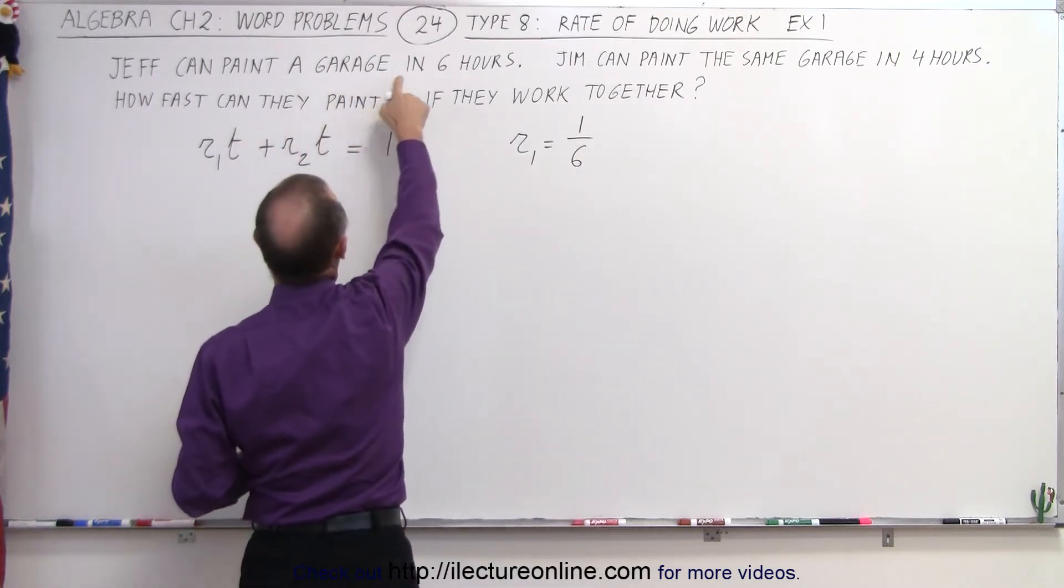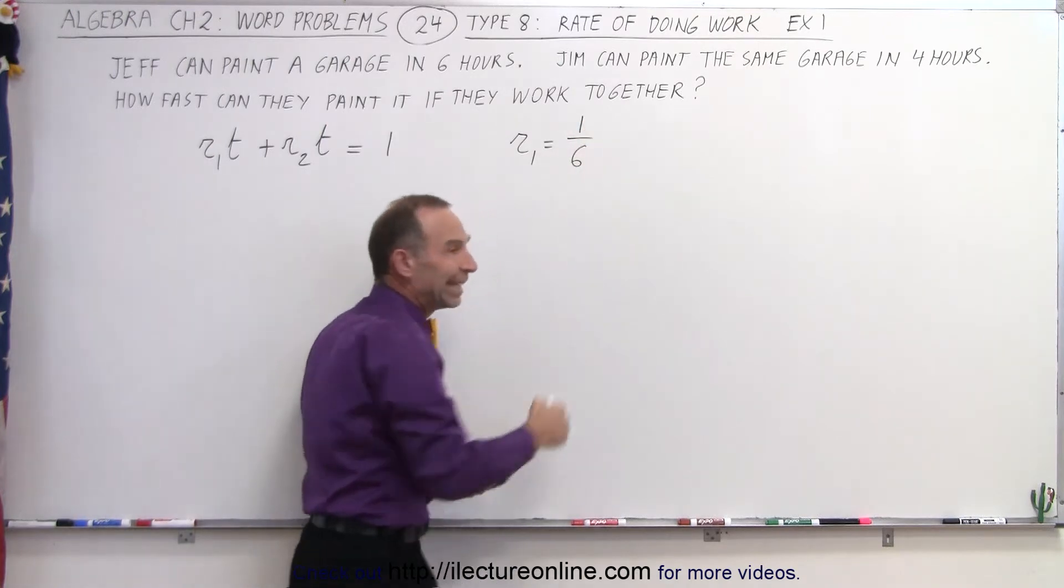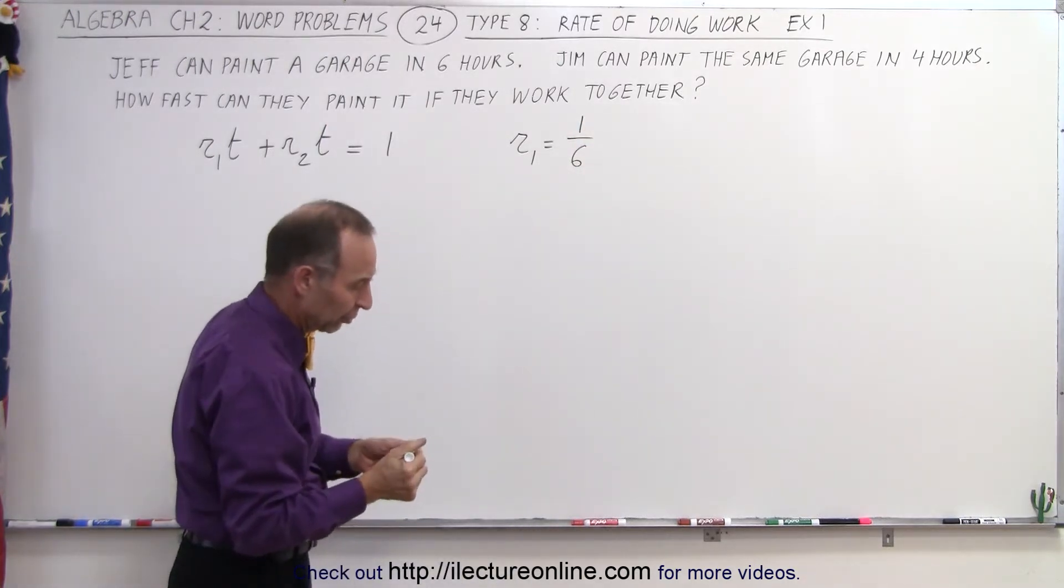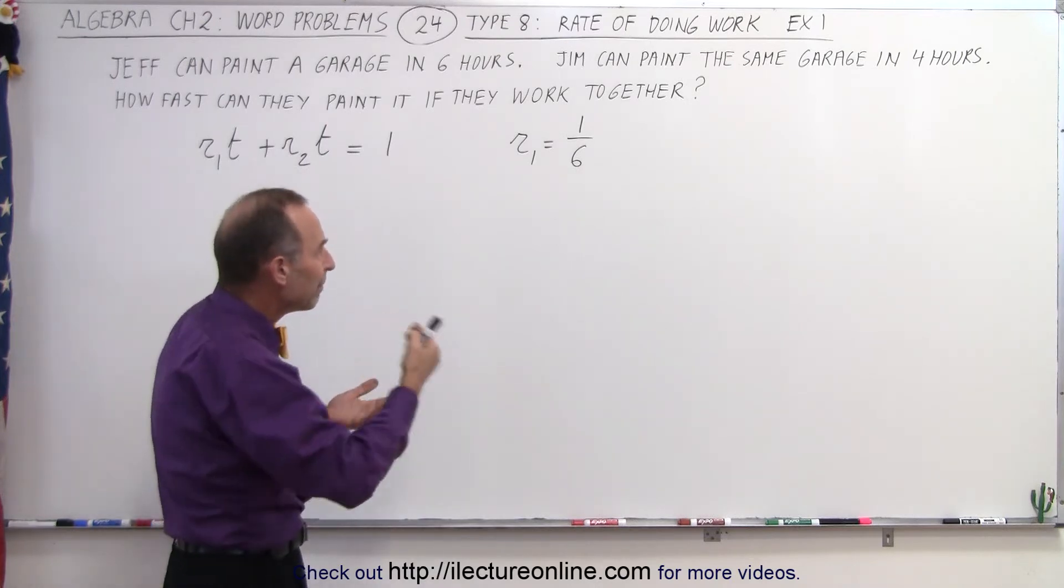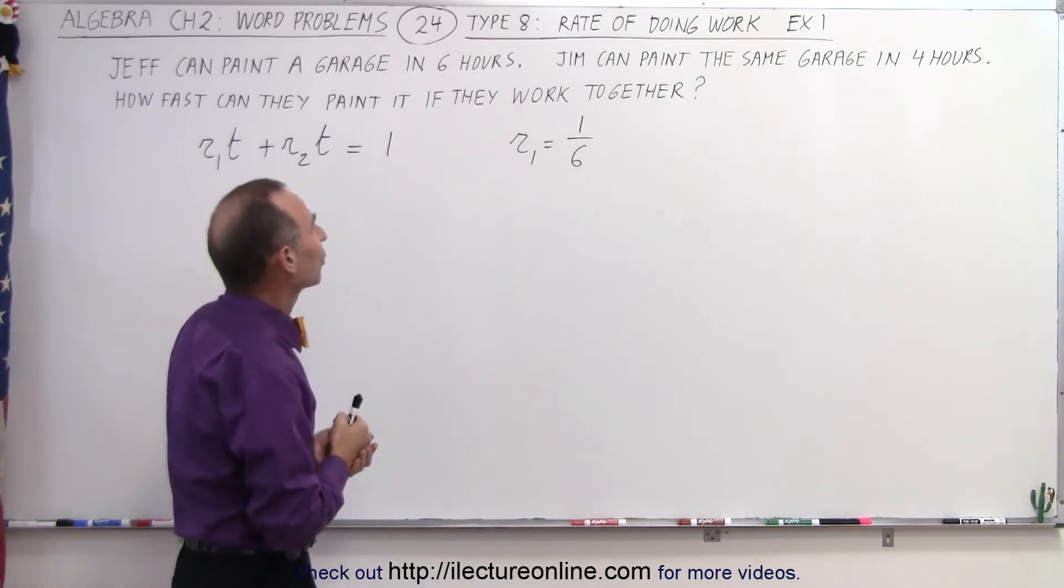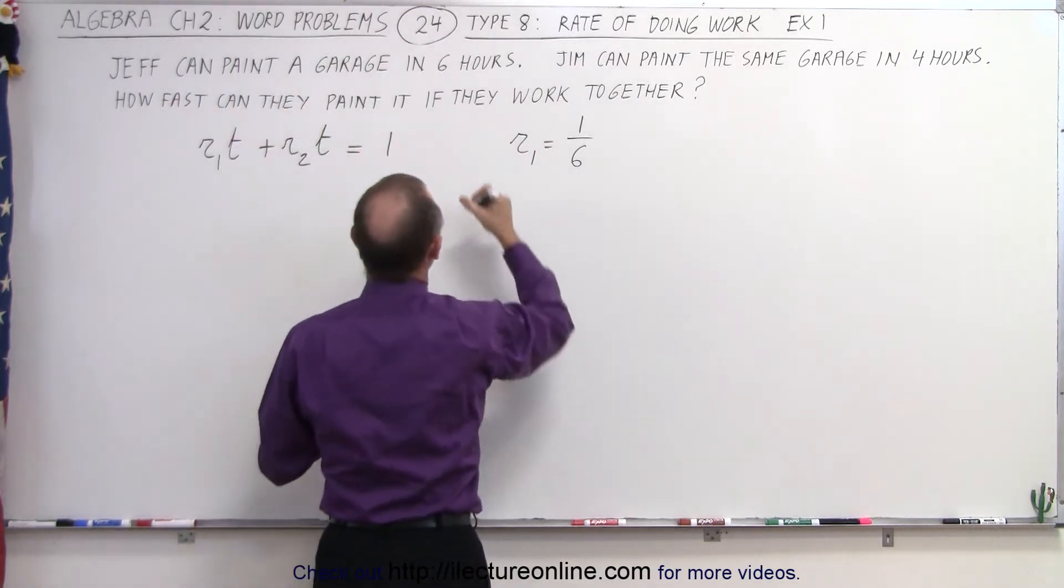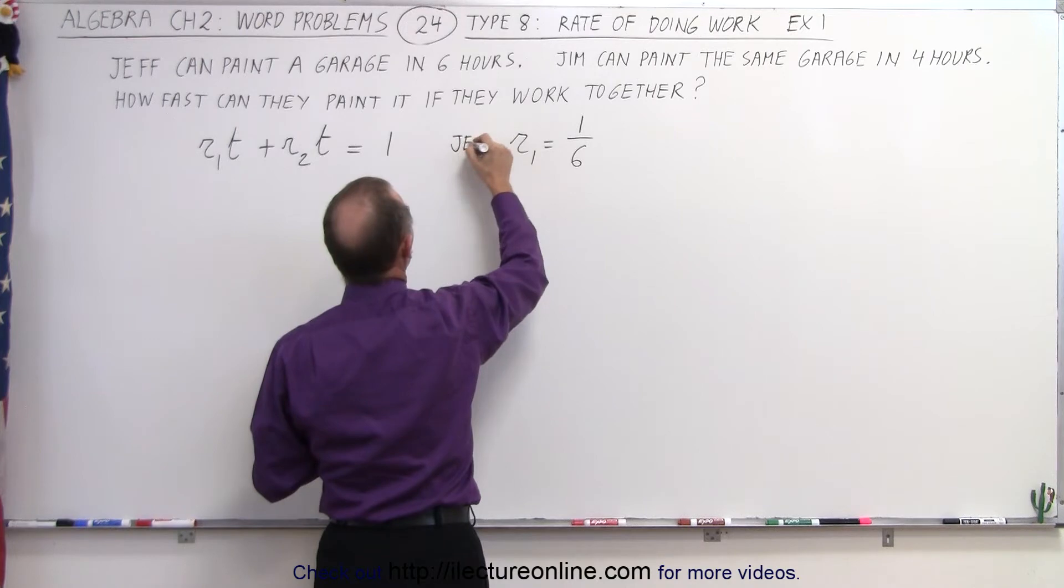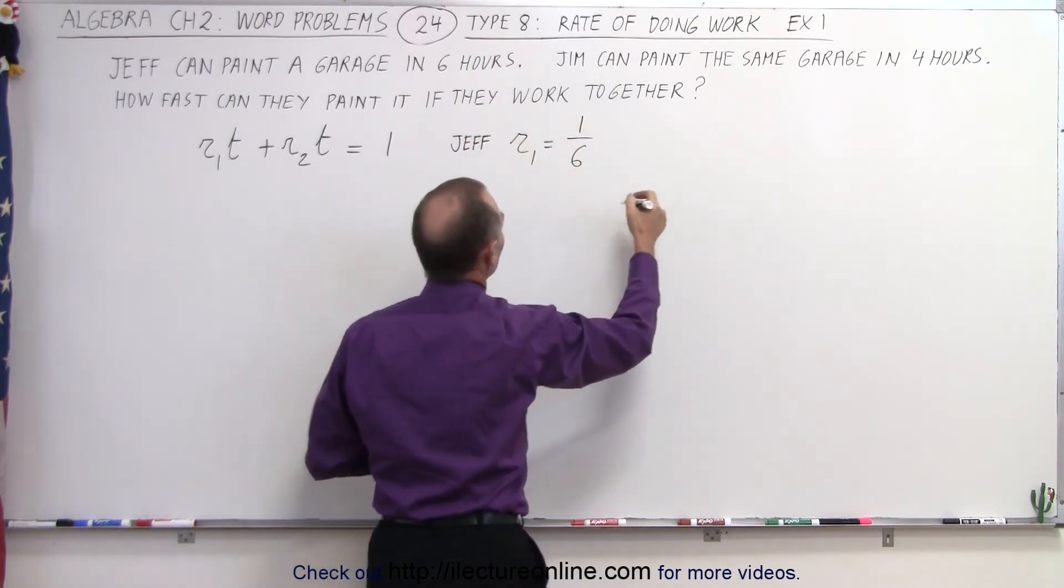In other words, if Jeff can paint the garage in six hours, that means he can paint one sixth of the garage in every hour. So if it takes him six hours to do the whole thing, then in every one hour, he paints one sixth of the garage. So that's the rate that Jeff can paint. Jeff can paint at one sixth of a garage every hour.